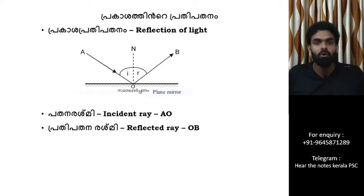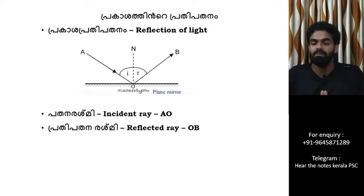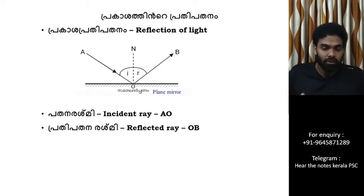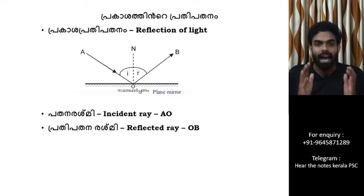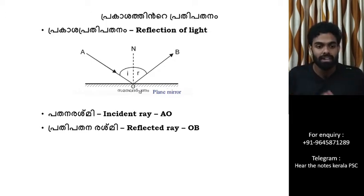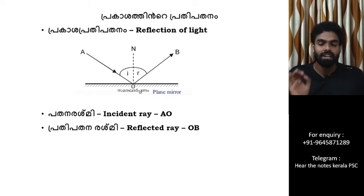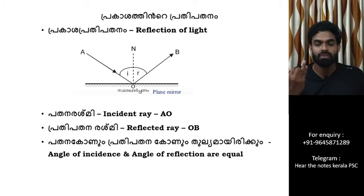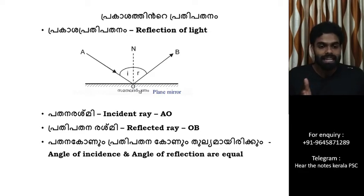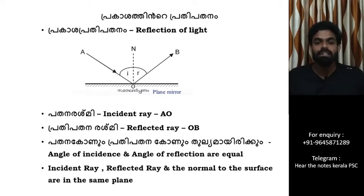The angle A-O makes with the normal is the angle of incidence. The angle of incidence equals the angle of reflection. The incident ray, the reflected ray, and the normal all lie on the same plane.